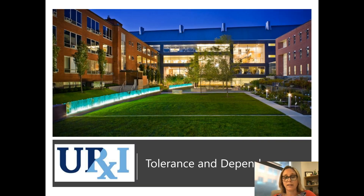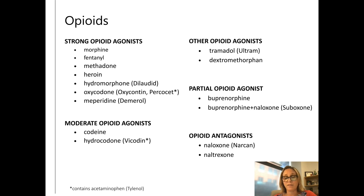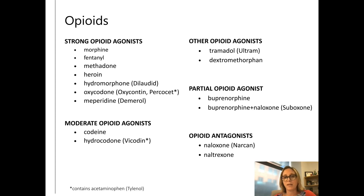I'd like to get into a little bit about the concepts of tolerance and dependence and how they interplay with opioid overdose risk. I find it very helpful when I meet with caregivers and families of someone struggling with substance use disorder to pull up this slide, because people have often heard the term opioid but really don't know which medications and substances are and are not opioids. There's a lot of misinformation circulating, so it's helpful to go through and teach about these different opioids and their different potencies.